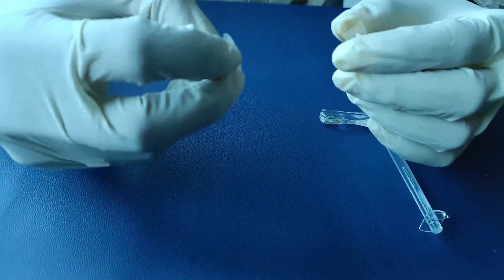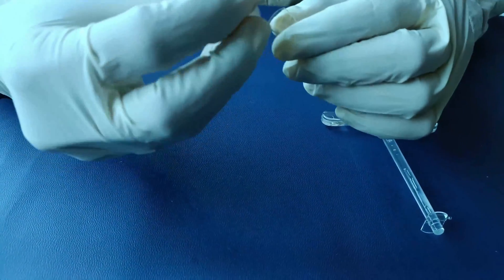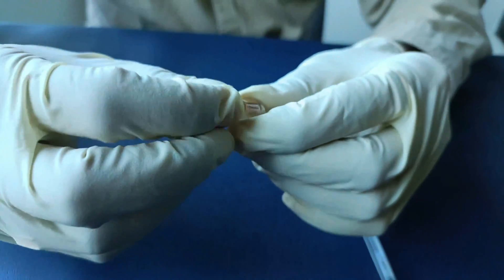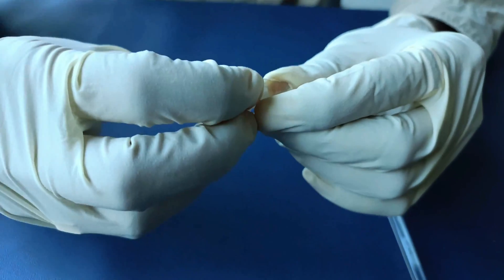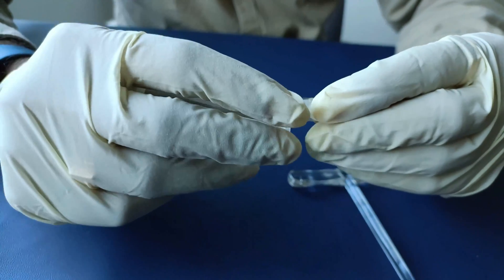Now squeeze the distal portion of outer cannula flange and insert the same in the smaller portion of the gel cap provided. You are now all set for the surgical insertion of the voice prosthesis outer cannula.